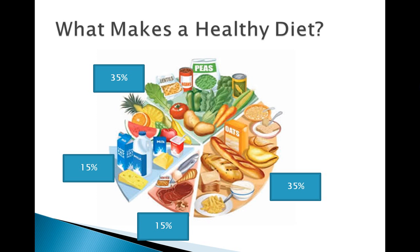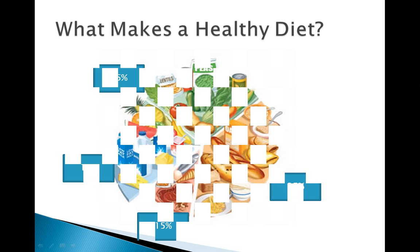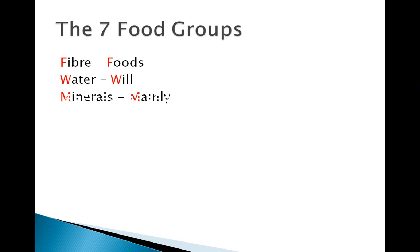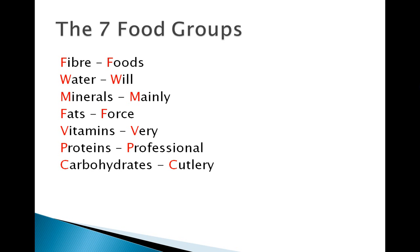The same goes for carbohydrates — we should have about 35% as well, and a 15% each for dairy and meat products. Now the seven food groups, as I've already stated, consist of fibre, water, minerals, fats, vitamins, proteins, and carbohydrates.